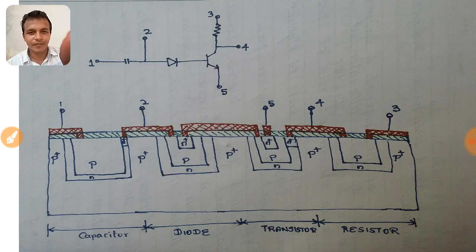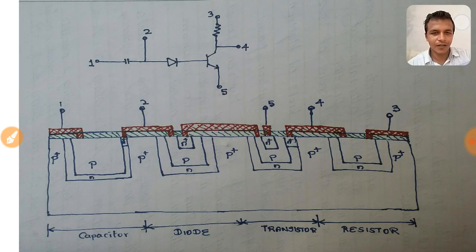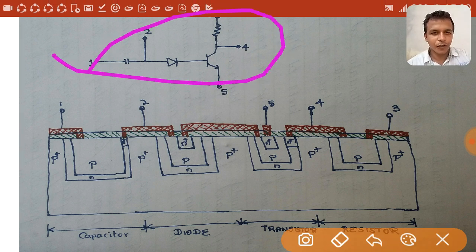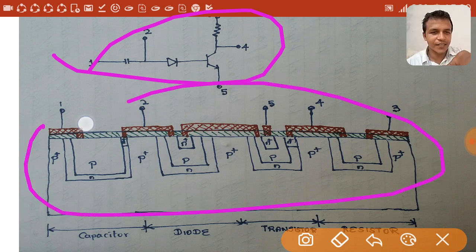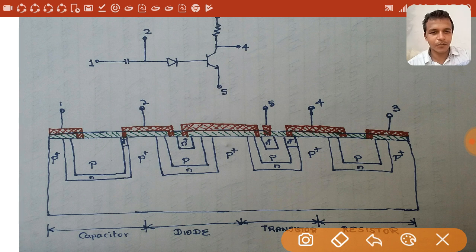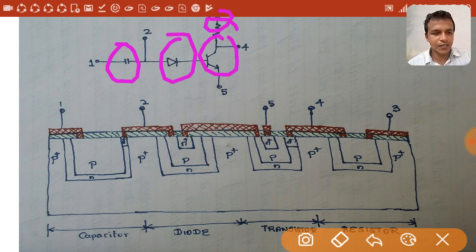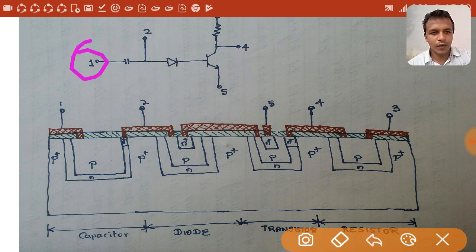This is the circuit we are going to design, and the cross-sectional view of the circuit in an IC is shown in this diagram. Let me briefly explain this circuit. It has four discrete components: capacitor, diode, transistor, and resistor, and there are five leads.